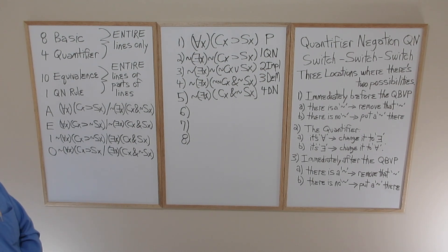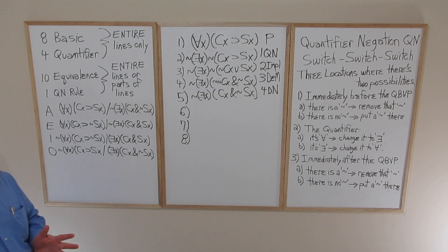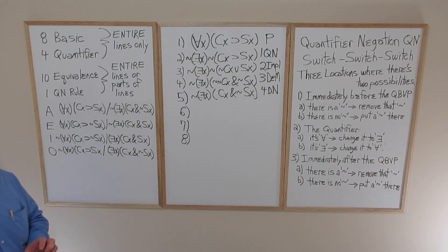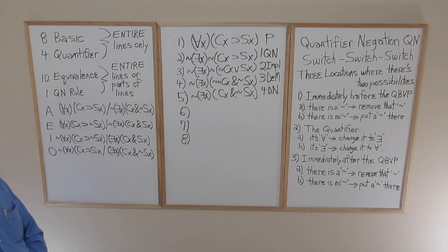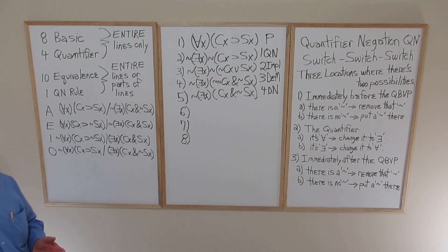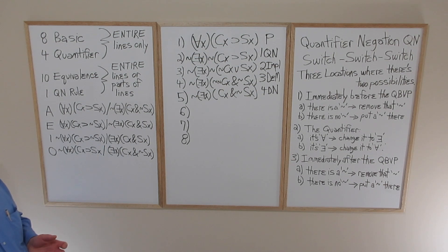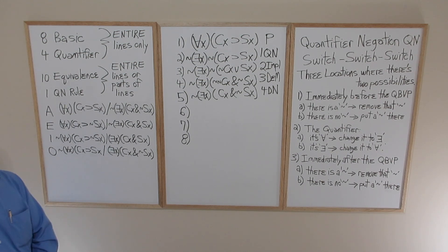So there we have it — the five new quantifier rules. Together with our 20 sentential logic rules, we're now ready to begin constructing proofs. There will be another video coming out in a day or two where we'll strategically employ some combination of the five quantifier rules and the sentential logic rules to construct proofs. It's very important to get all five new rules under our belts so we can use them along with the 20 rules of sentential logic. Thank you.